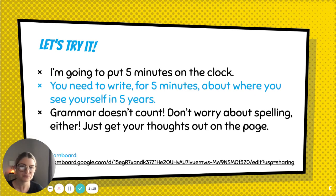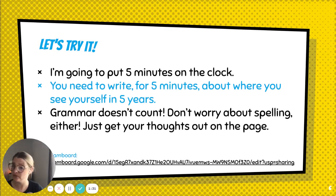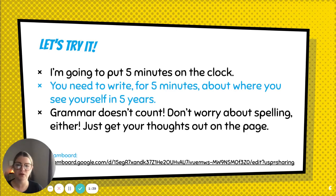Right now, I want you to take out a piece of paper or go to a Google Doc — I'd actually suggest going to a Google Doc. You can also go to the Unit 1 discussion page and download that. Put five minutes on your clock, then just write down where you see yourself in five years. Just brainstorm for five minutes. Grammar doesn't count, don't worry about spelling — just get your thoughts out on the page.